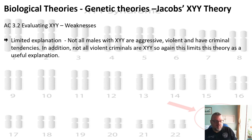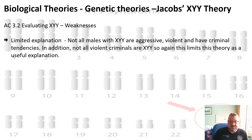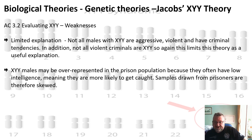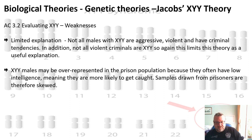XYY is also a very limited explanation: not all males with XYY are aggressive — there is no 100% concordance rate — and not all violent criminals are XYY, so the theory is limited as a useful explanation of criminality. Additionally, XYY males may be overrepresented in the prison population because their lower intelligence means they're more likely to get caught. Samples drawn from prisoners are therefore skewed, because those who were not caught aren't featuring in the sample, which would skew the statistics further towards the norm.